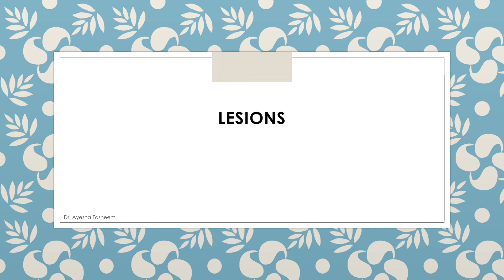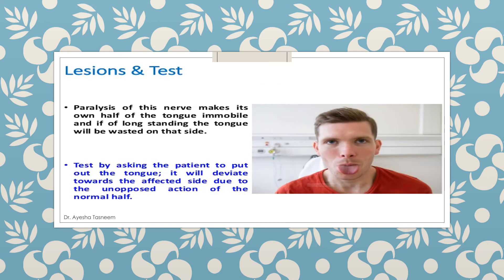Now we come to the lesions of the hypoglossal nerve. Paralysis of this nerve makes its own half of the tongue immobile, and if long standing, the tongue will be wasted on that side. The test is performed by asking the patient to put out the tongue — it will deviate towards the affected side.